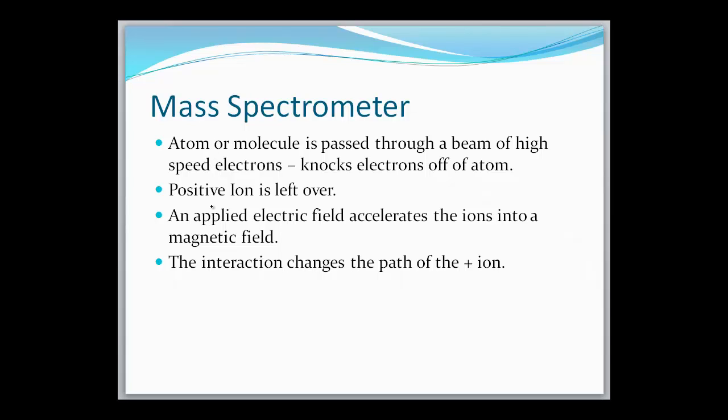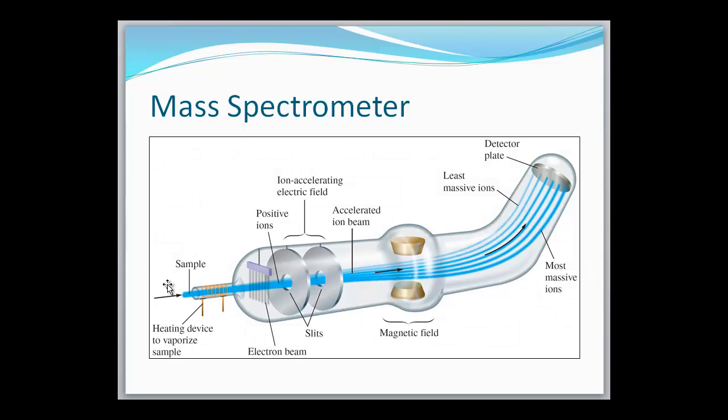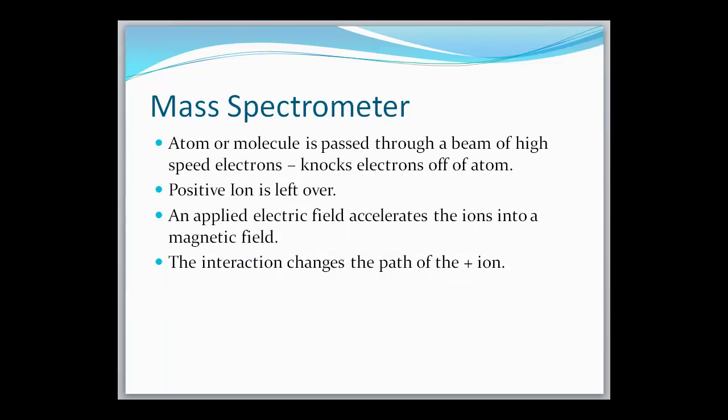So what I'm going to do is read through the directions here, and we're going to refer to a diagram, but what you might want to do is go back and forth between the directions and the diagram. Okay, first of all, what happens is an atom or a molecule is passed through a beam of high-speed electrons. As this atom moves through this beam, the beam knocks the electrons off of the atom. So if you're taking away the electrons, which are negative, what's going to be left over is a positive ion. So for example, if you're shooting hydrogen through that beam and it knocks off hydrogen's one electron, what's left is the hydrogen ion, which is positive.